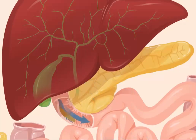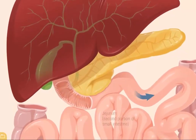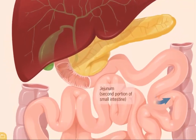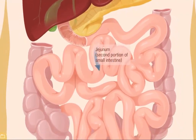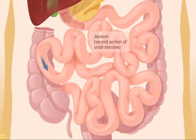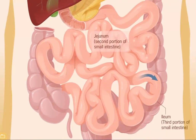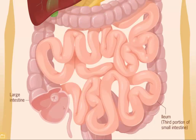The bile mixes with the chyme and helps to digest fat. The chyme continues to mix with the digestive enzymes as it moves through the duodenum and into the jejunum, the second portion of the small intestine. Nutrients from the digested food are absorbed into the bloodstream in the jejunum. The bolus moves through the jejunum and reaches the ileum, where there is more nutrient absorption.